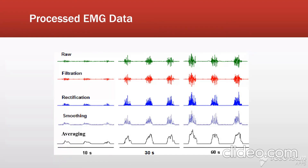So what does this process do to our signal step-by-step? Well, in green we can view the raw data, which would be coming out of the ADC. In red, we show our filtered signal, which comes out of our bandpass filter that we designed in software. Following that, we have our full wave rectification in blue. Following that, we have our smoothing, which is eliminating a lot of unnecessary noise, and averaging, which is giving us a nice, clean, final signal.